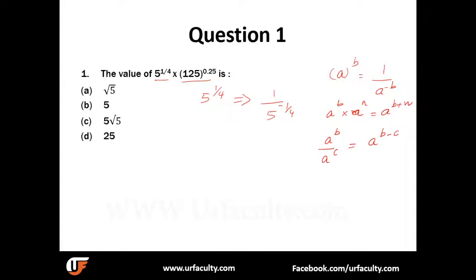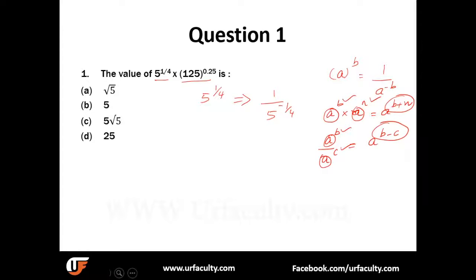Please note: if the base is the same and you are multiplying, the powers just need to be added. If the base is the same and you are dividing, the powers just need to be subtracted. And when you are doing a reciprocal, the power becomes negative. Very simple. This is the basic concept that will be applied across surds and indices.